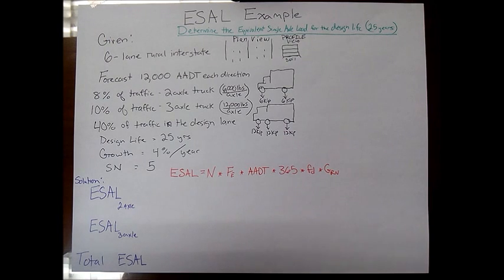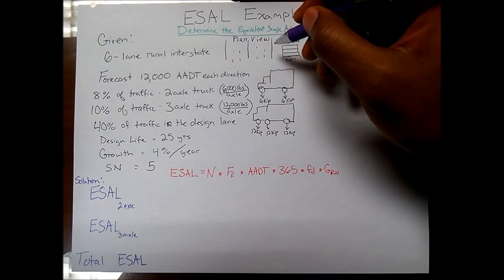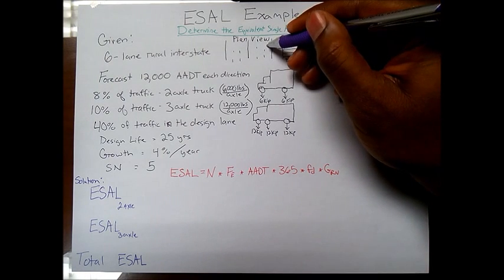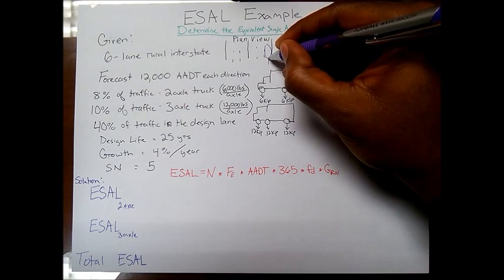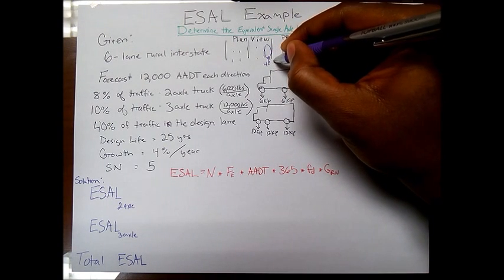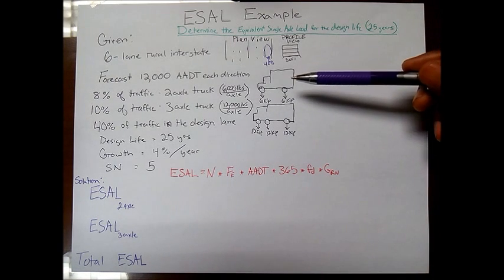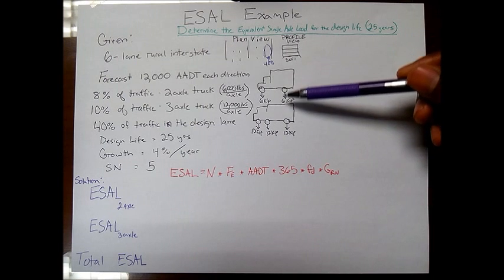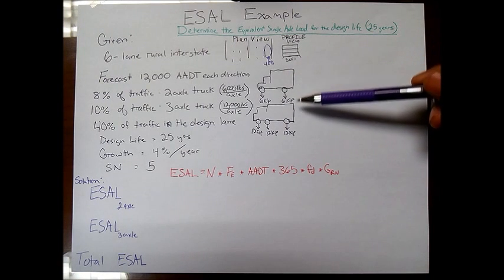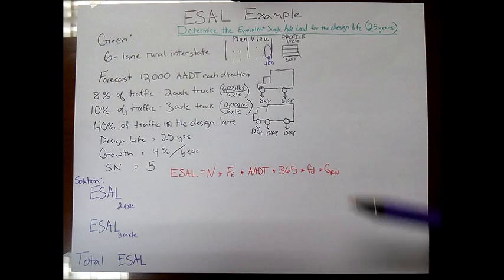It says 40% of the traffic in the design lane. By the way, in most cases our design lane would be the right lane, because the left lanes are the passing lane. Most of our traffic, especially truck traffic, travels in their right lane. The design life is said to be 25 years and we have a growth rate of about 4% per year. I'm assuming that 4% is for both of these truck types, so you got to be careful unless otherwise stated.